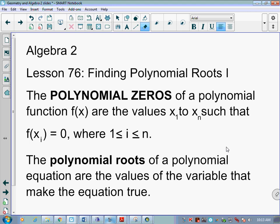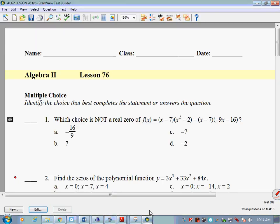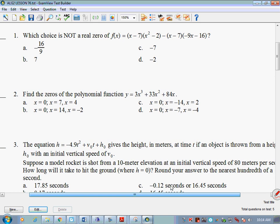The polynomial zeros of a polynomial function are the values x sub 1 to x sub n such that f of x sub i equals 0 where 1 is less than or equal to i, i is less than or equal to n. The polynomial roots of a polynomial equation are the values of the variable that make the equation true. So whenever I plug something in for x and it comes out and equals what it's supposed to equal, those are my polynomial roots. Typically speaking, when we look at where these polynomials are graphed, it's going to be where it crosses the x-axis, where y equals 0. I think that first statement actually does more to complicate it than it does to clarify anything.